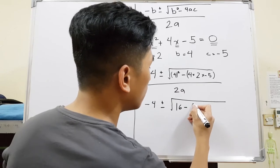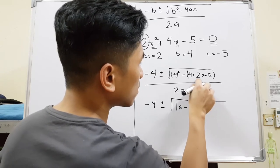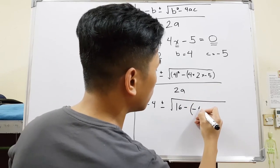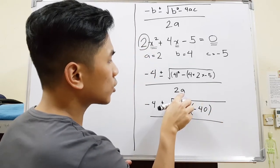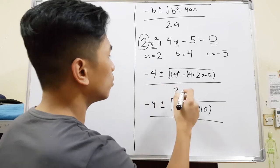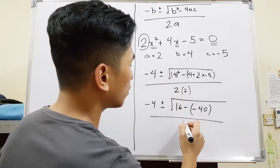And then when I simplify this, that's negative 40. All over, sorry, I did not change my A here. Our A is 2, so that will be 4.